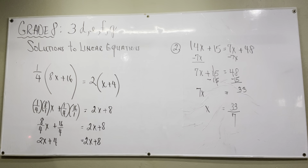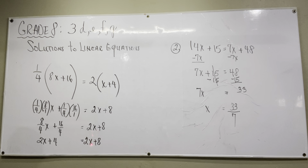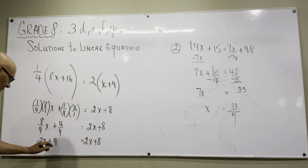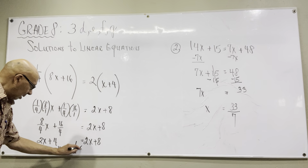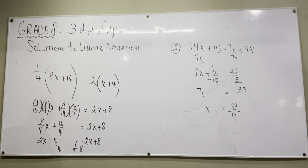Here's the question: what are the solutions to this equation? Well, 2x plus 4 is never going to equal 2x plus 8 because 8 is bigger than 4. If we try to solve for x by subtracting 2x from both sides, we're left with 4 equals 8, and 4 does not equal 8. So there are no solutions to this equation — there's no value of x that will make this work.